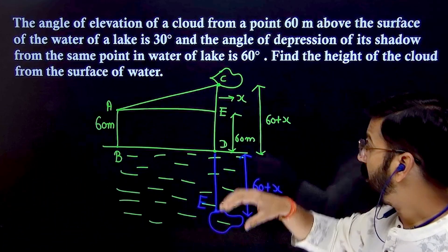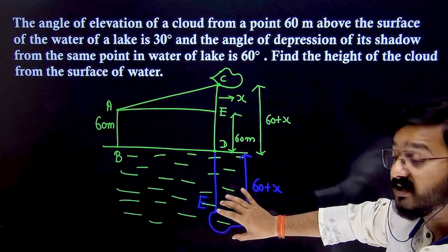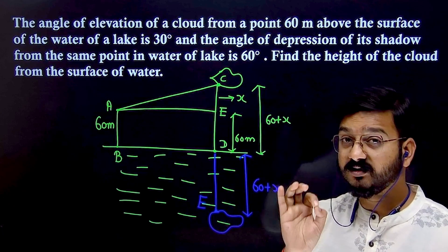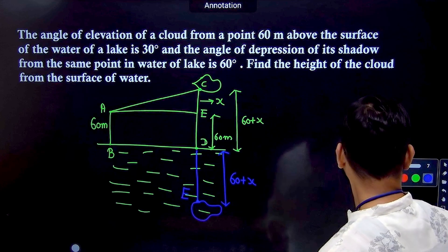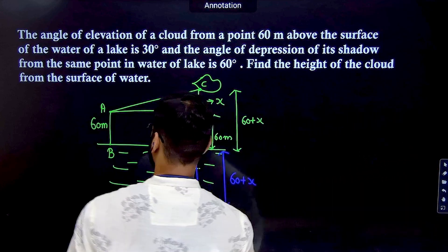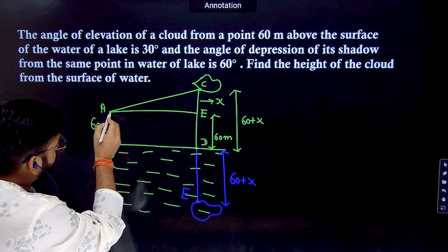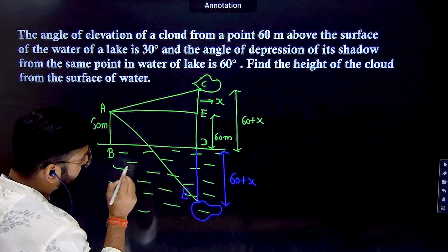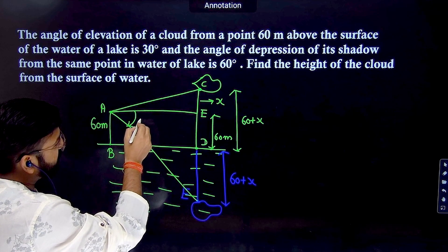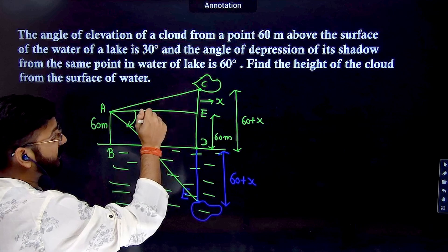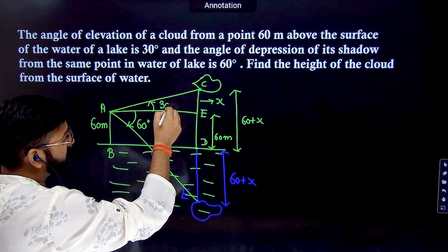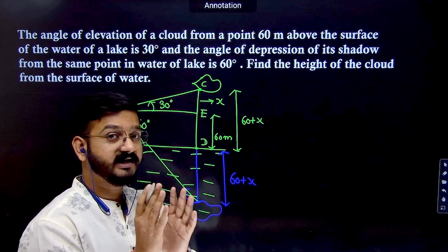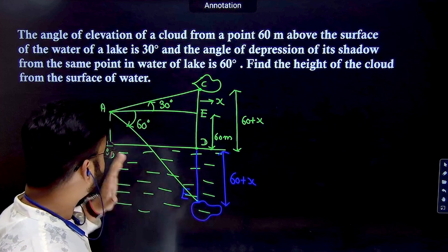Let's draw the reflection of the cloud. Mark this point as E. This distance should be the same as 60 + X. Why? The object is the cloud, the reflection is the image, so object distance and image distance are the same. We are seeing the cloud reflection from the same point A. When I join point A to the cloud reflection, I am seeing it at 60°. The cloud is seen at 30°.